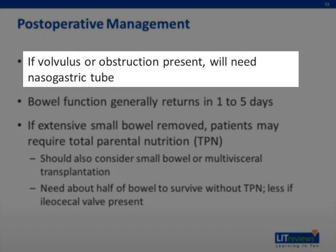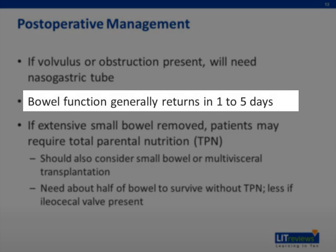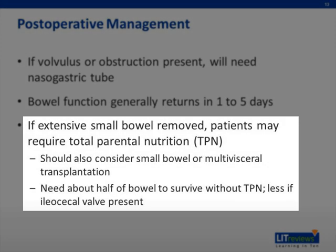If volvulus obstruction is present, the patient will need a nasogastric tube following the procedure. Typically, bowel function returns in one to five days. If extensive small bowel is removed, patients may require total parenteral nutrition, or TPN. Patients with extensive small bowel removed should also be considered for small bowel or multivisceral transplantation. In general, you need about half of your bowel to survive without TPN, and less if the ileocecal valve is present.